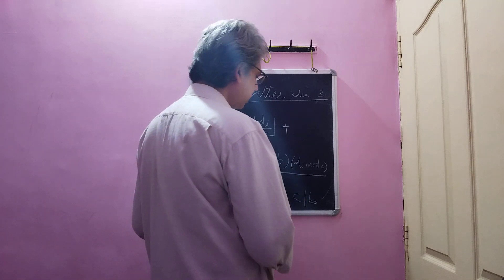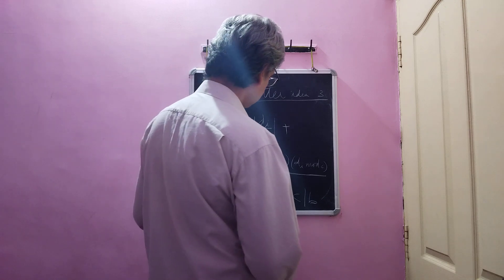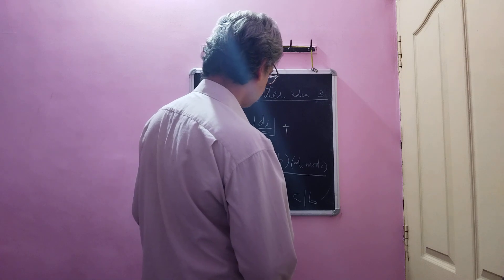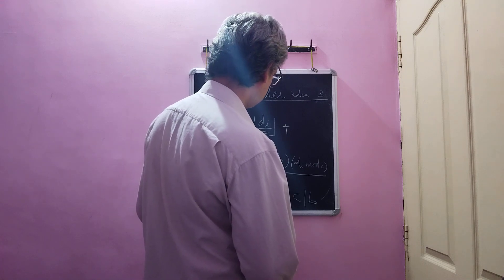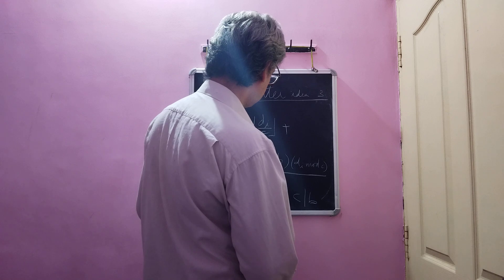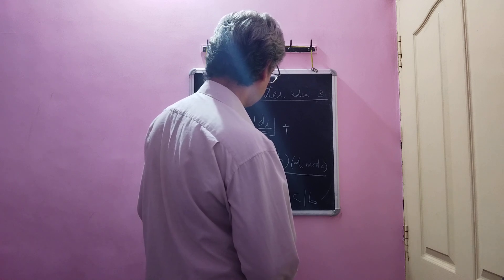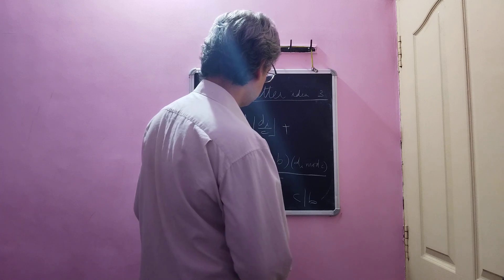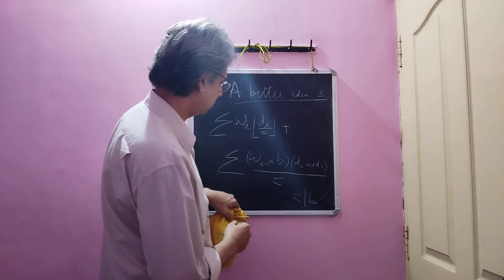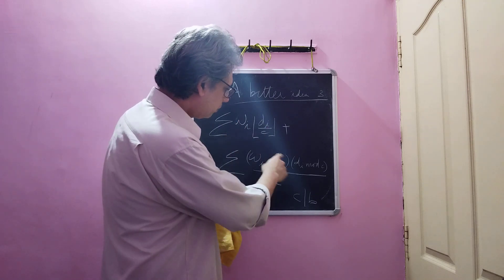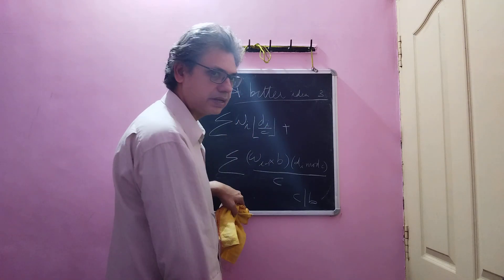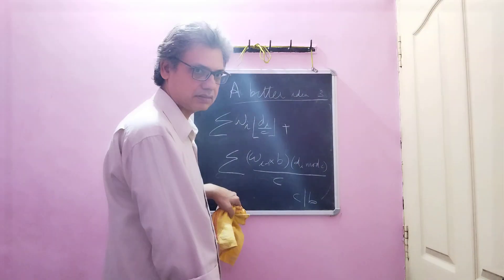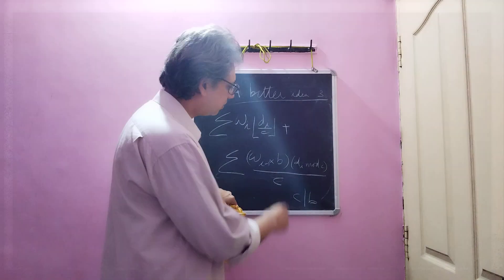The mod of that will be 0. So this part will always be an integer, whole number or an integer, except for the last digit whose weight will be 1 instead of b.